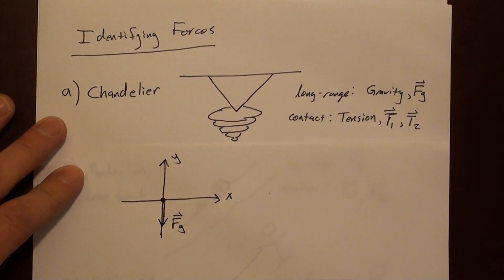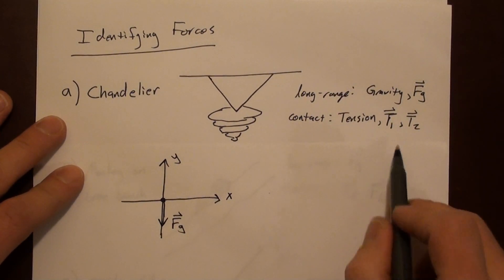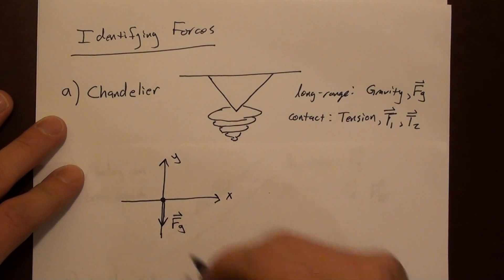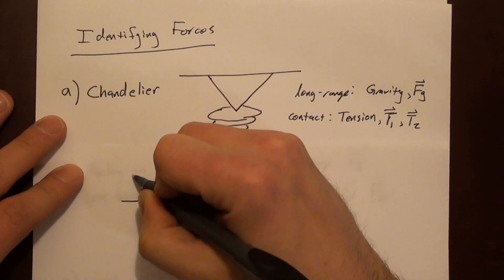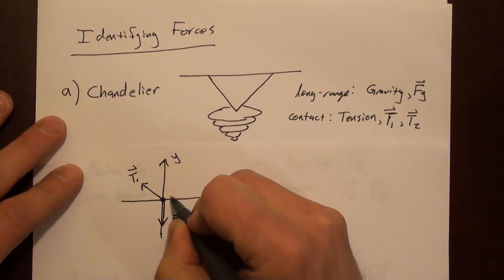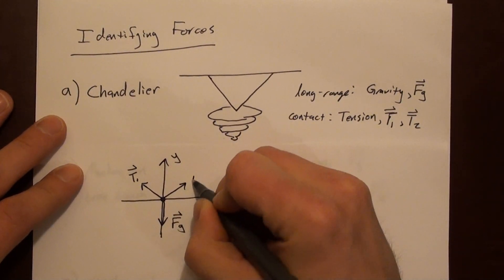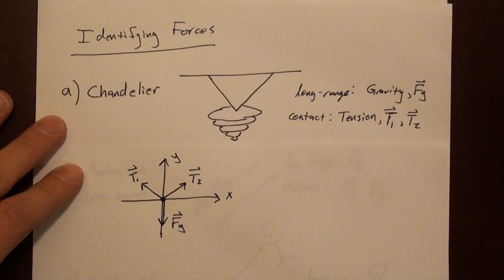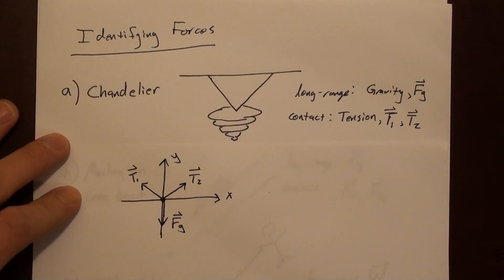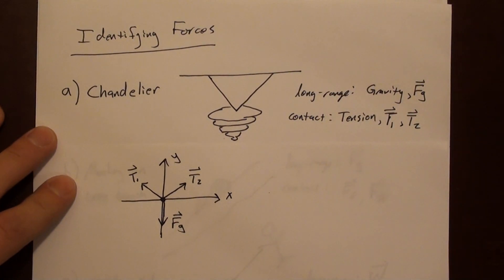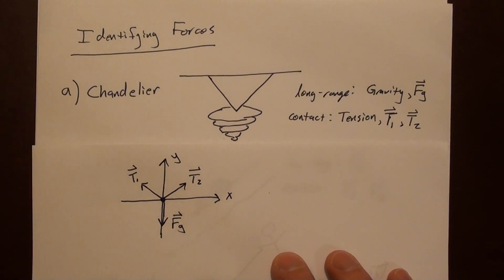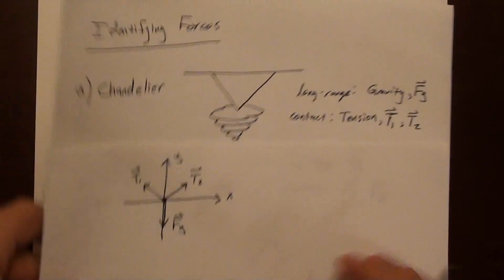We also have the two tensions T1 and T2, both pointing at angles — one going off this way and one going off the other way. This is our free body diagram for the chandelier.